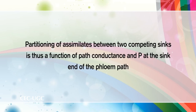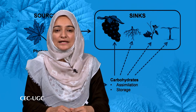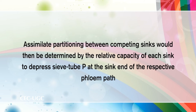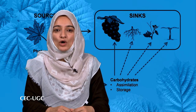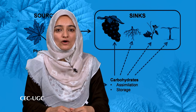Partitioning of assimilates between two competing sinks is a function of path conductance and pressure at the sink and of the phloem path. Since phloem has spare capacity, differences in conductance of interconnecting paths would exert little influence on the rate of phloem transport to competing sinks. Assimilate partitioning between competing sinks would then be determined by the relative capacity of each sink to depress sieve tube pressure at the sink end of the respective phloem path. Utilization of imported sugars is broadly maximized when sugars are abundant, but when sugar supply is low, utilization is increasingly restricted to sites crucial for uptake of water and minerals.